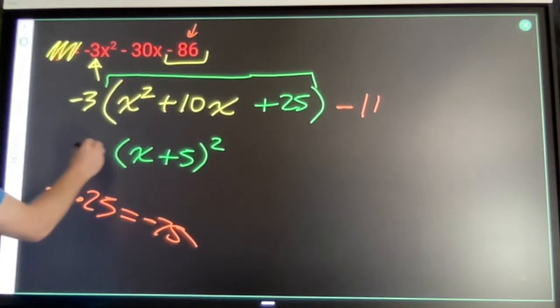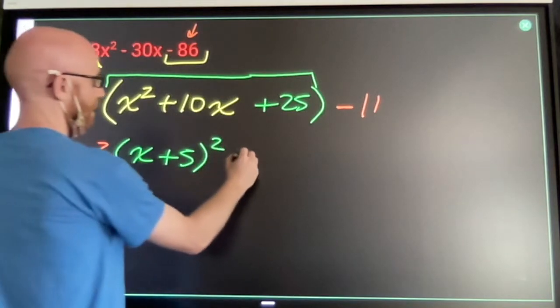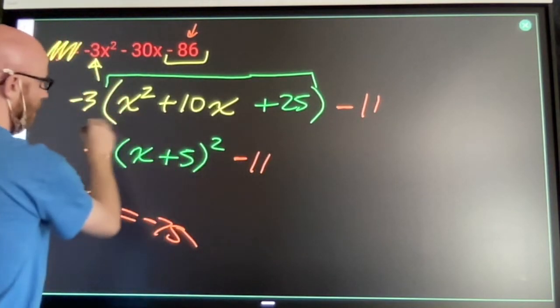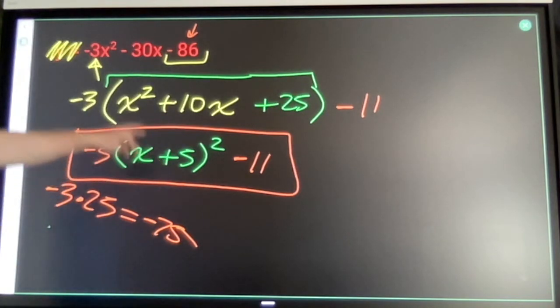So finish out the process. Get a negative 3 here. We get a minus 11 there. That is vertex form of what's in red.